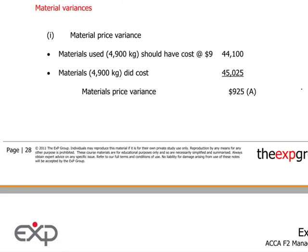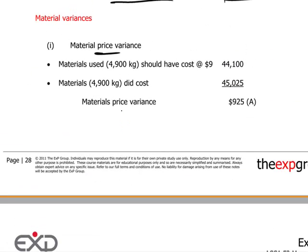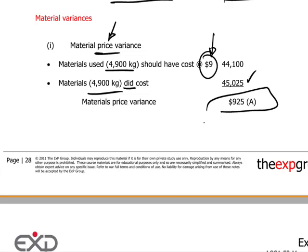Now let's look at the cost side — the materials-related variances, which consist of two dimensions: the materials price variance and the materials usage variance. For the price variance: 4,900 kilograms were purchased and used. They should have cost $9 per kilogram according to the cost card, but the actual total cost was higher, giving a materials price variance of $925 adverse.